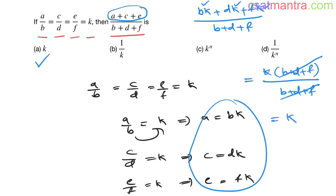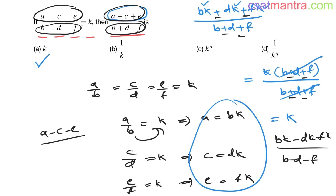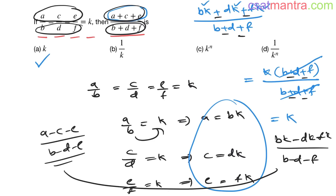So the result is k — a very important result. This works for all numerators and denominators. It also holds when you have minus signs: for example, (a−c−e)/(b−d−f) gives bk − dk − fk over b−d−f. Taking k outside: k(b−d−f)/(b−d−f), which cancels to give k.